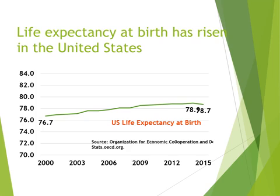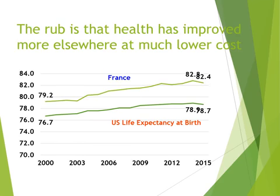Let's look at life expectancy at birth in the United States. Life expectancy has risen from 76.7 in 2000 to about 78.7 in 2015 — a change, but not a significant one over 15 years. Meanwhile, in France, life expectancy went from 79.2 in 2000 to 82.4 in 2015, compared to the U.S. going from 76.7 to 78.7. Health has improved more elsewhere at a much lower cost.